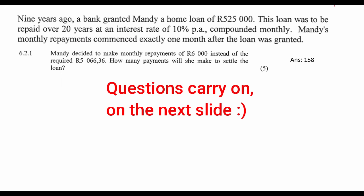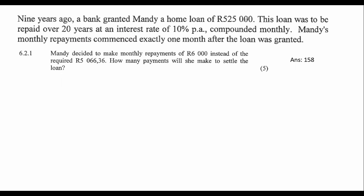Nine years ago, a bank grants Mandy a loan of 525,000 Rand. The loan is repaid over 20 years, compounded monthly. Mandy's monthly repayments commenced exactly one month after the loan was granted — that's pretty normal, that's how it should be. Mandy decides to make monthly repayments of 6,000 Rand instead of 5,066. How many payments will she make to settle the loan?